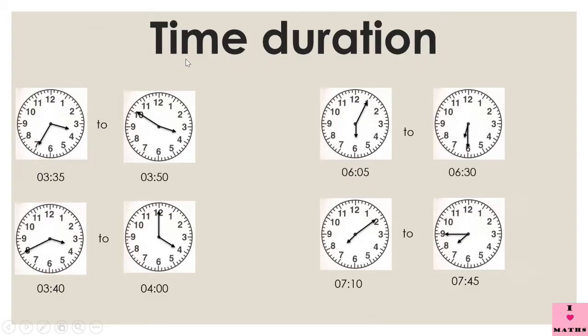Good morning children, how are you all? We have learned how to read time. In this video, we are going to learn one more thing — how to find the time duration if two times are known to us: the starting time and the ending time of an event. We are going to do it with a PowerPoint presentation. There are so many events where you want to know the time duration, like a movie or a football match.